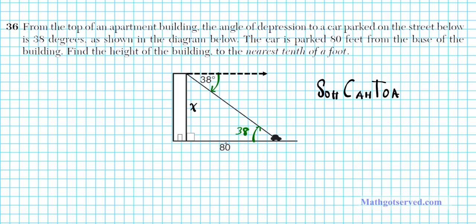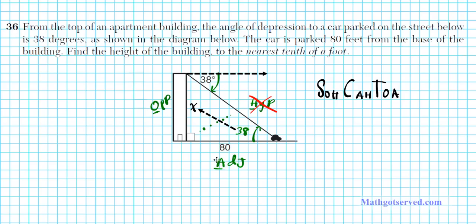Let's label the sides. The side opposite 90 degrees is the hypotenuse — the longest side. The side opposite the given 38-degree angle is the opposite side. The remaining side is the adjacent. Now, which side do we not know and do not need? We know the adjacent (80 feet), we need the opposite (x), and the hypotenuse plays no role — we don't know it and don't need it, so we scratch it out. We need the trig ratio involving opposite and adjacent.